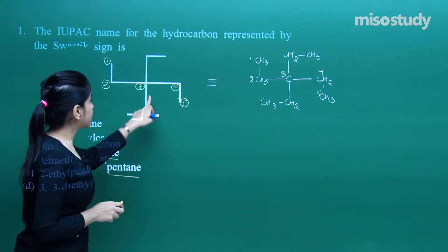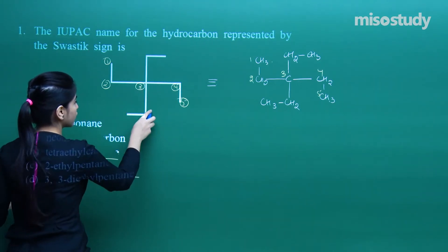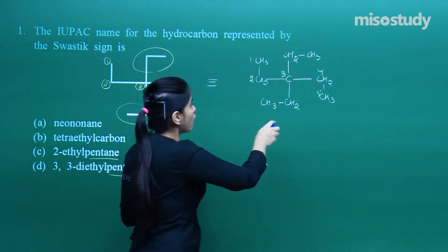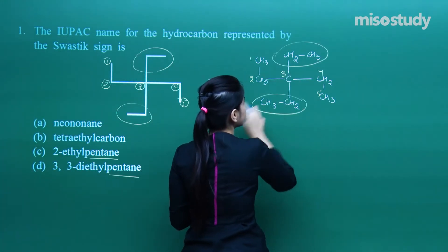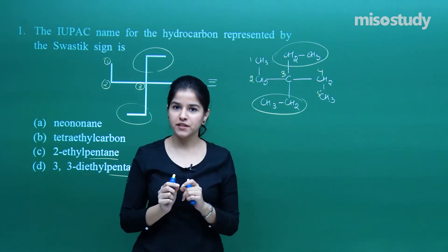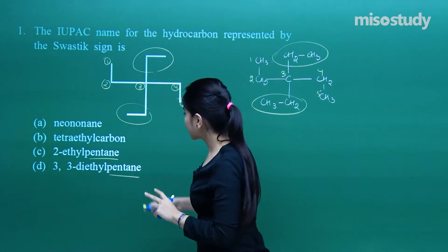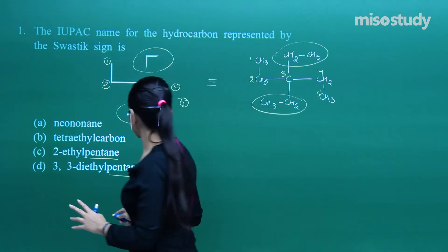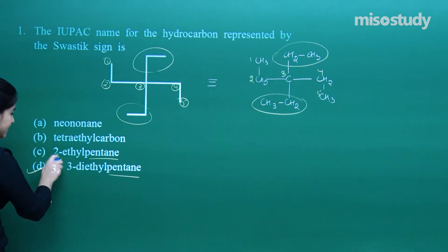Now what I need to see is that on the third carbon, I have got two ethyls. On to the third carbon, I have got two ethyls. That means the answer is 3,3-dimethylpentane. So it's 3,3-dimethylpentane is the answer.